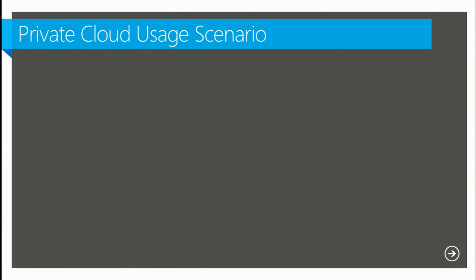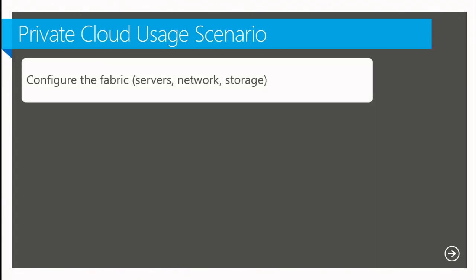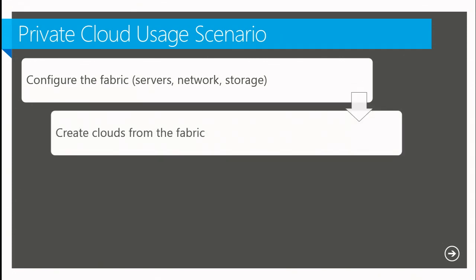I'm going to walk you through how we think about the workflow related to taking hardware and exposing it to self-service users. The first step is to take the physical hardware and set it up — racking servers, figuring out your networking topology, allocating storage devices, and determining how storage capabilities are offered. Think of it as taking the data center and chopping it up into the pieces that make it all work.